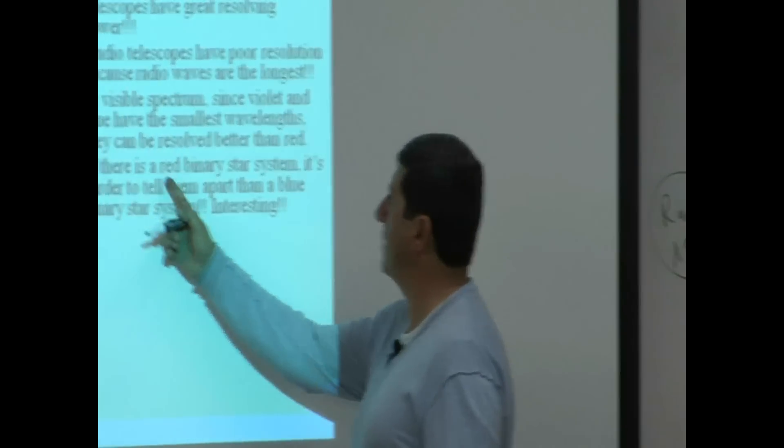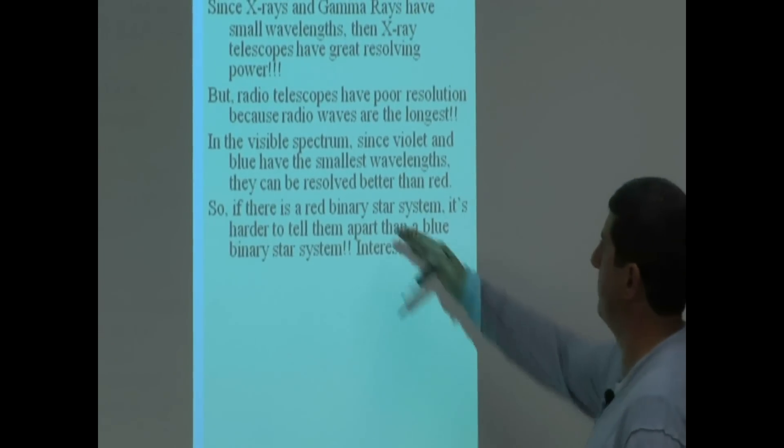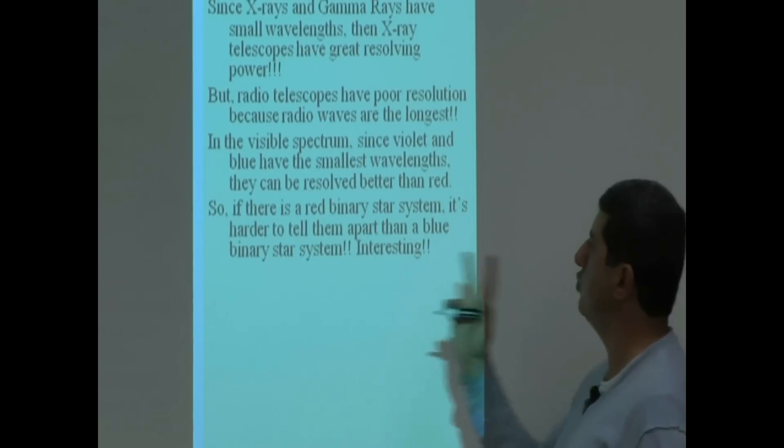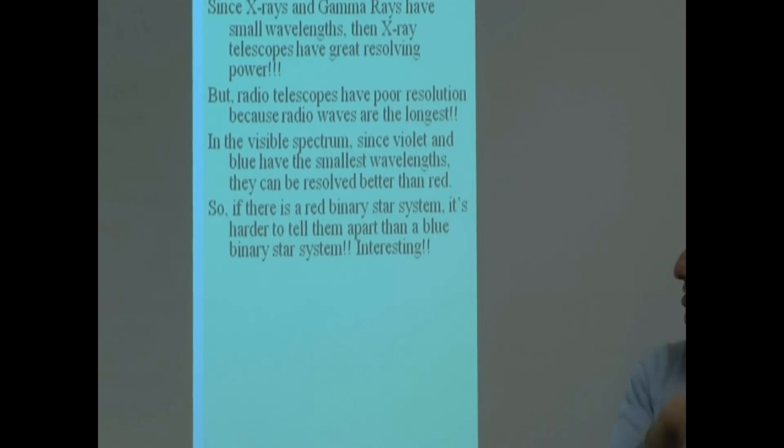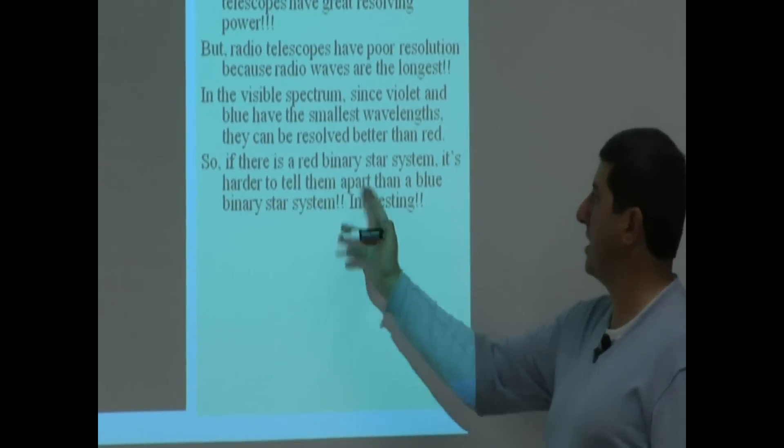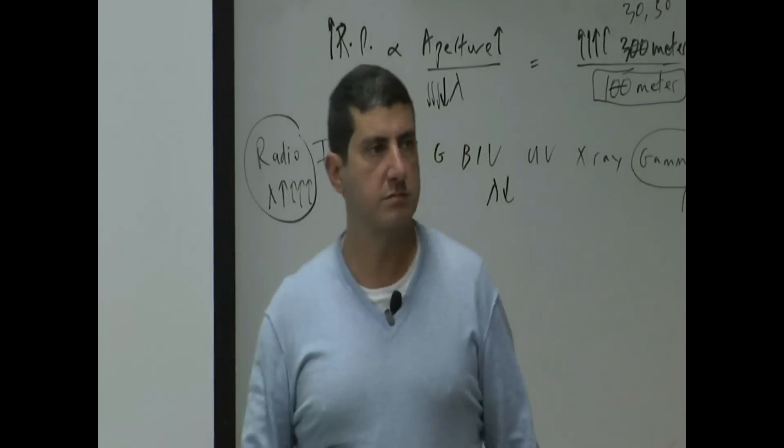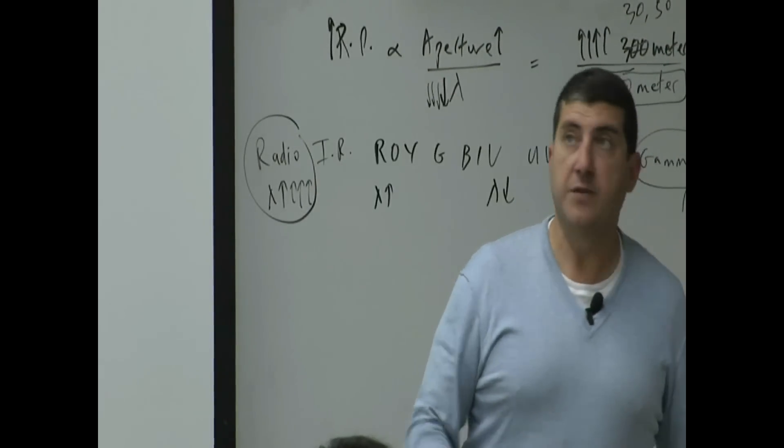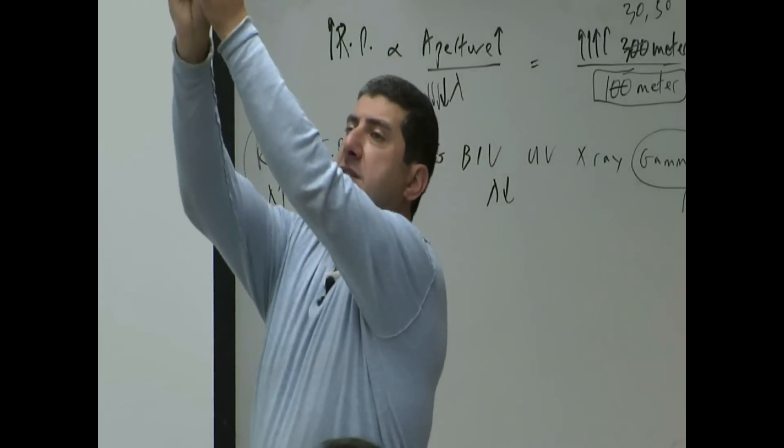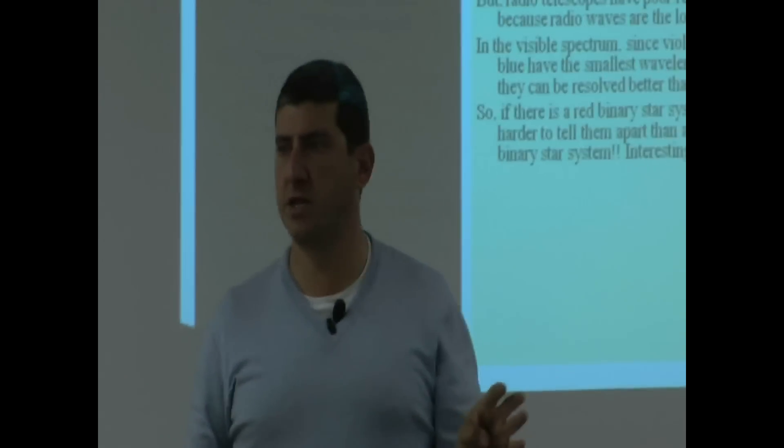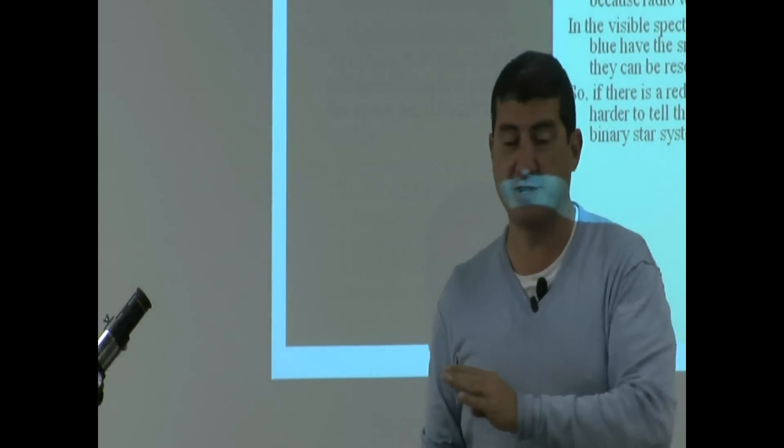So, if there is a red binary star system, so coming back to the issue of red versus blue, if there is two red stars, binary stars, it's harder to tell them apart than a blue binary star system, and that's interesting. So, if you have two red stars that are right next to each other in the sky, it's going to be harder for you to tell that there are actually two red stars versus if they were two blue stars.